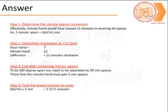To find the required separation, we need 5 more minute spaces. We convert these 5 minute spaces into minutes by multiplying with 60/55. So the answer is 5 and 5/11 minutes past 7.